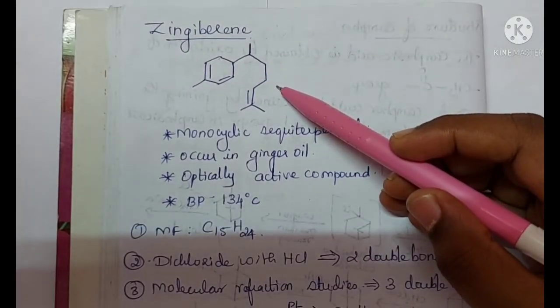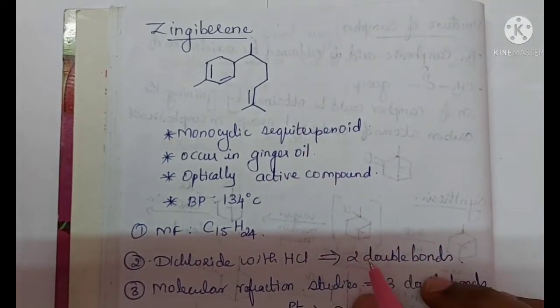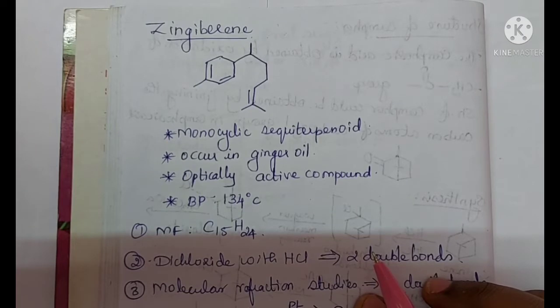As you can see, this is the structure of Zingiberine. It is a monocyclic sesquiterpene and it occurs in ginger oil. It is an optically active compound and its boiling point is 134 degrees Celsius.